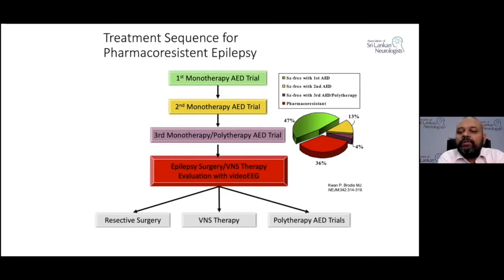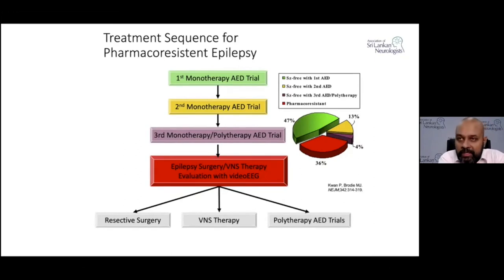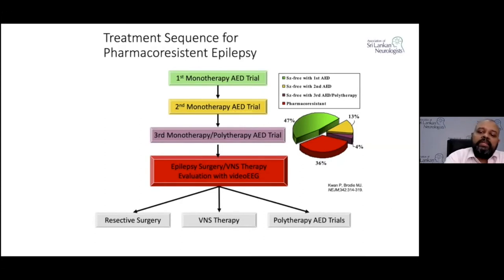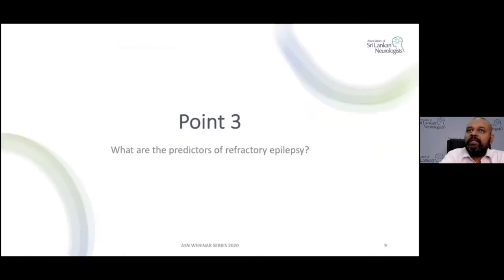Therefore, the idea is that if you need more than two antiepileptic drugs to control seizures, the chances are that the patient will be pharmacoresistant and you may need to consider alternative treatment options. That's why we have taken two antiepileptic drugs as the threshold rather than three or four or five.